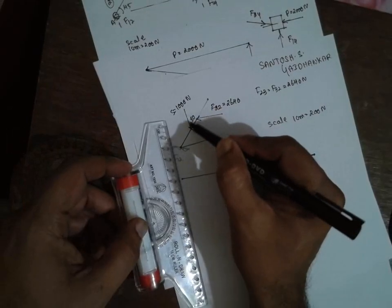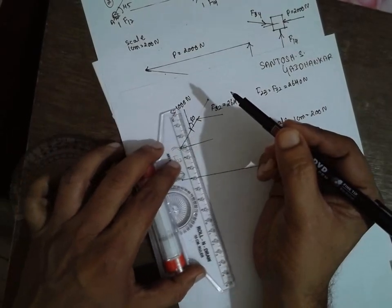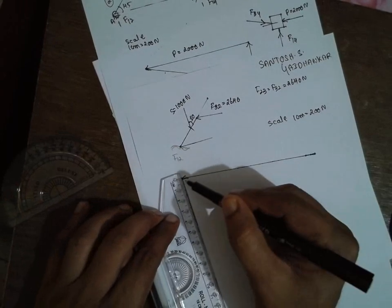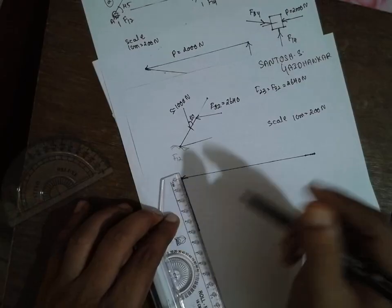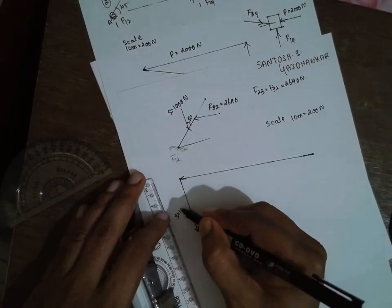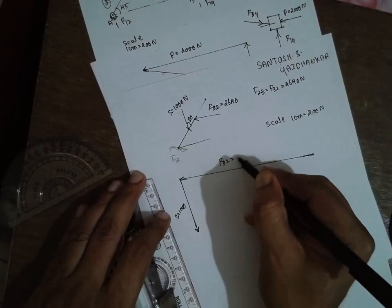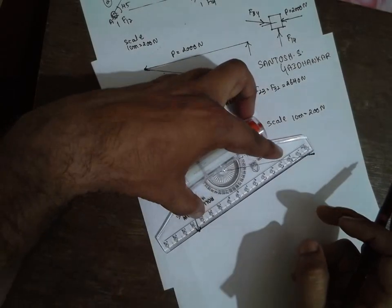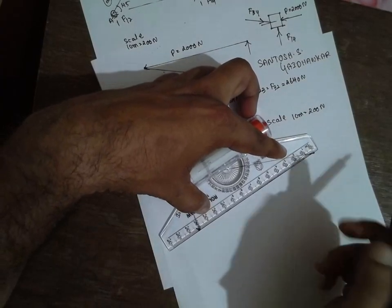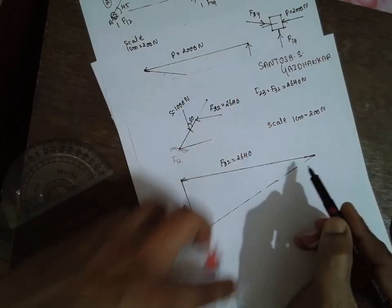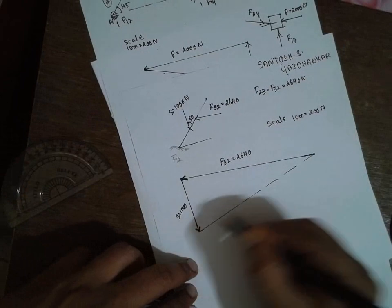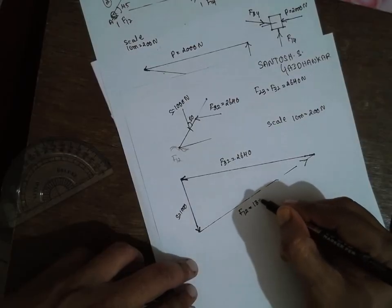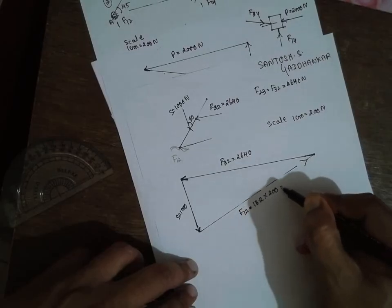This completes the second part. S = 1000 Newton and F32 = 2640 Newton are known. We are finding F12: draw a dotted line to close the polygon. As per the closed polygon, the third vector direction is determined, and this is F12. Measuring it gives 13.2 cm, so F12 = 13.2 × 200 = 2640 Newton.